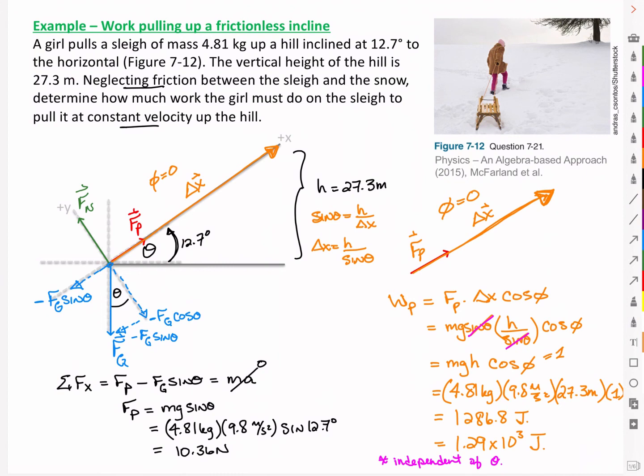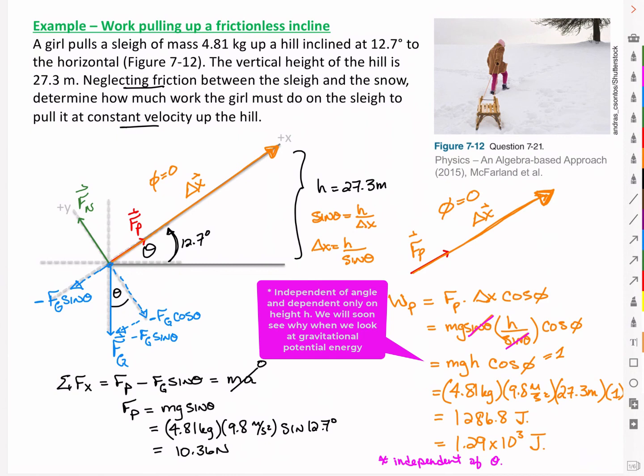One of the other things that you might have noticed here is that I cancelled out the sin thetas when I was calculating the work, and that means that the answer there is independent of theta. It's independent of the slope of the hill. It means that the work I have to put in doesn't depend upon how steep the hill is. It didn't matter whether it was a long, shallow incline or a short, steep incline.